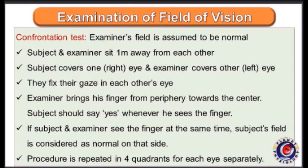The most important thing here is that the examiner's field is assumed to be normal and the subject's field is compared with the examiner's. The subject and examiner sit opposite each other at a distance of 1 meter with their eye levels matching. The subject covers the right eye and the examiner covers the left eye. They fix their gaze in each other's eye. The examiner brings a finger from the periphery towards the center and the subject says 'yes' as soon as he sees the finger. If both visualize the finger at the same time, the subject's field is considered normal for that quadrant. The procedure is repeated in all 4 quadrants for both eyes separately.